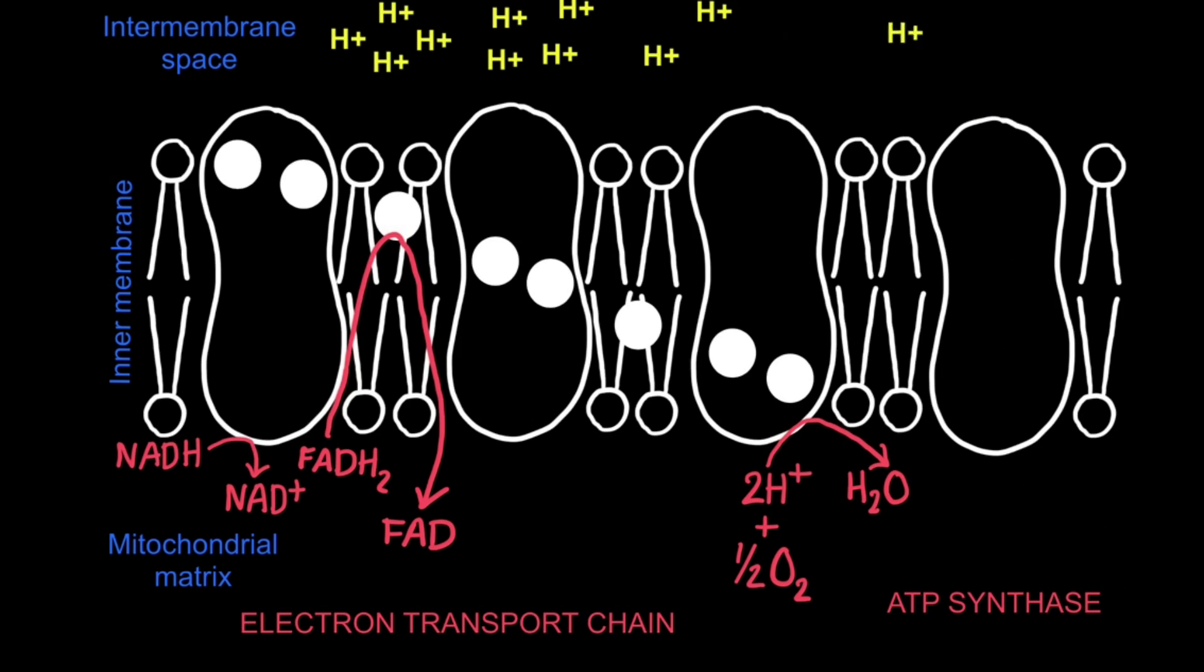Therefore, the hydrogen ions diffuse passively through a channel in ATP synthase back into the mitochondrial matrix from an area of high concentration to an area of low concentration. The enzyme harnesses the available energy, therefore allowing for the phosphorylation of ADP into ATP. This process is known as chemiosmosis.